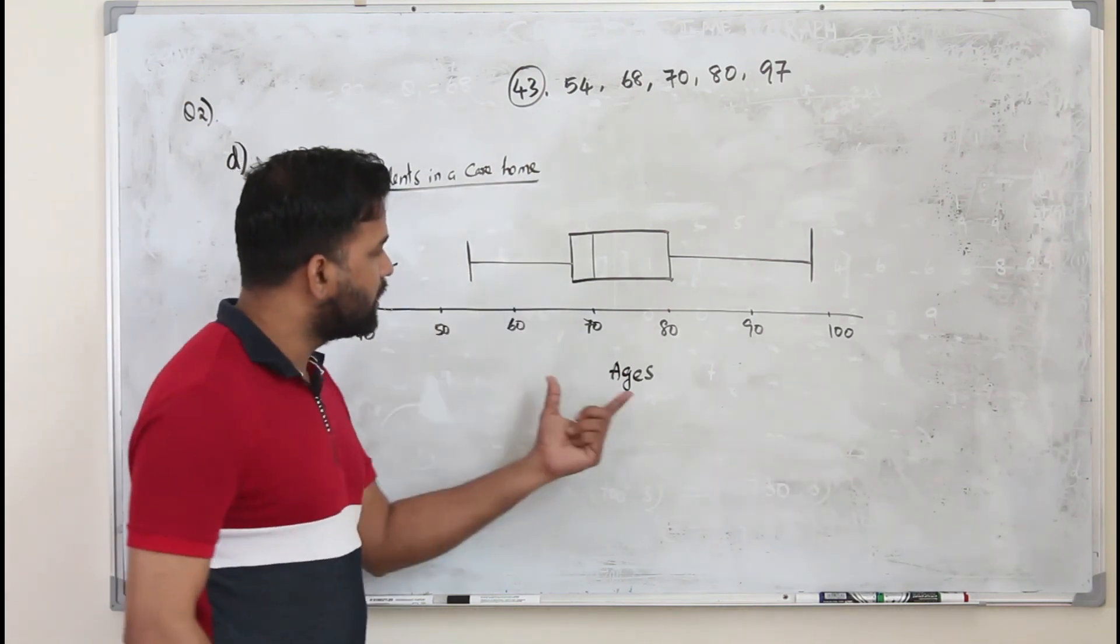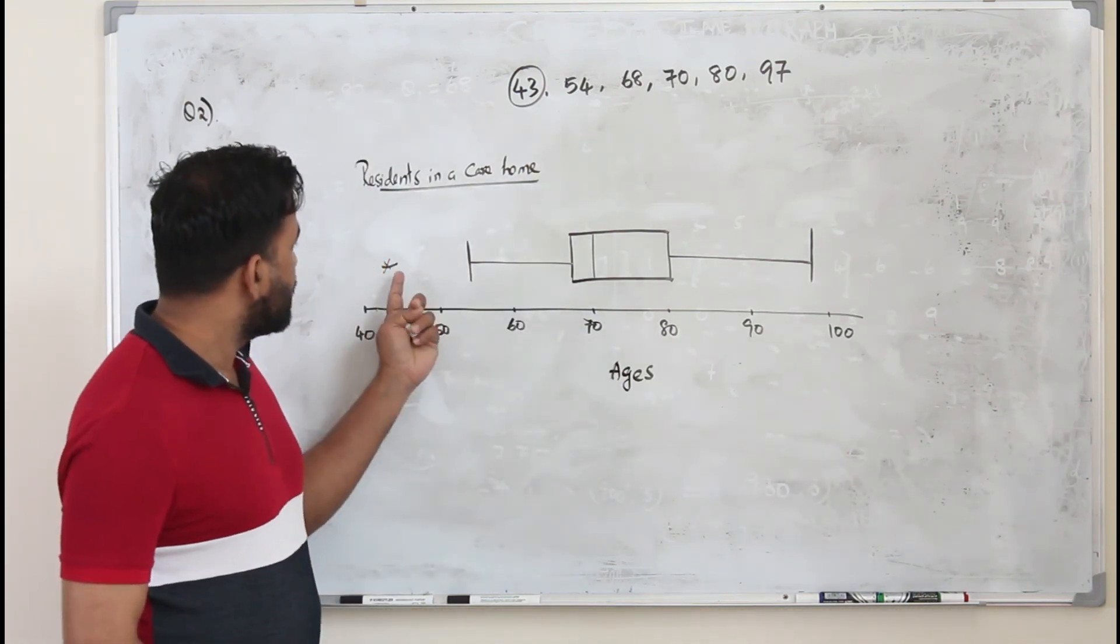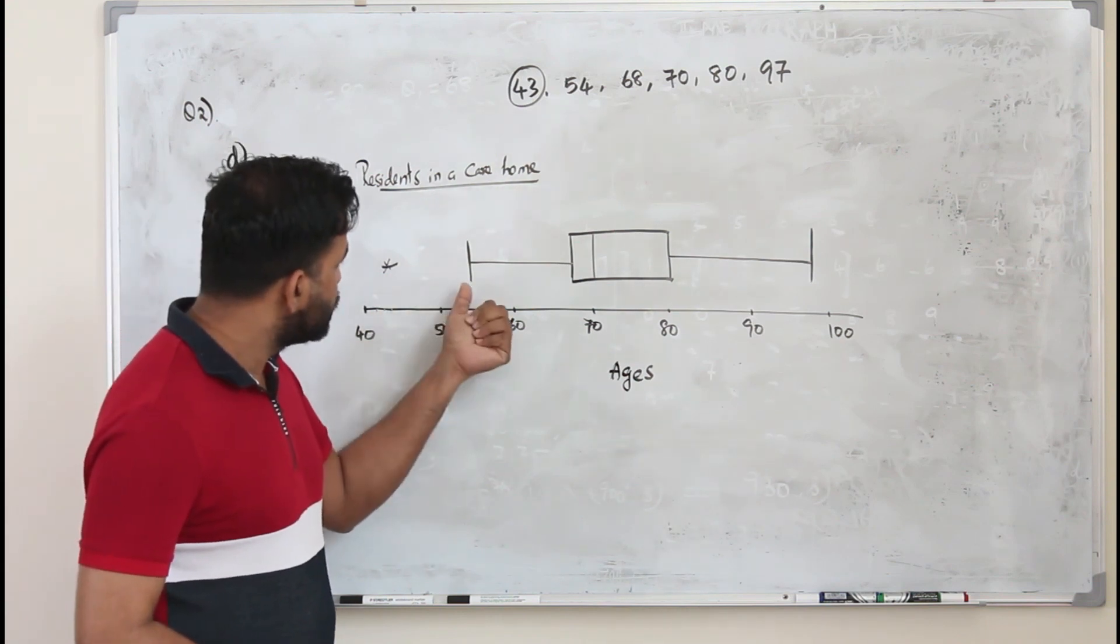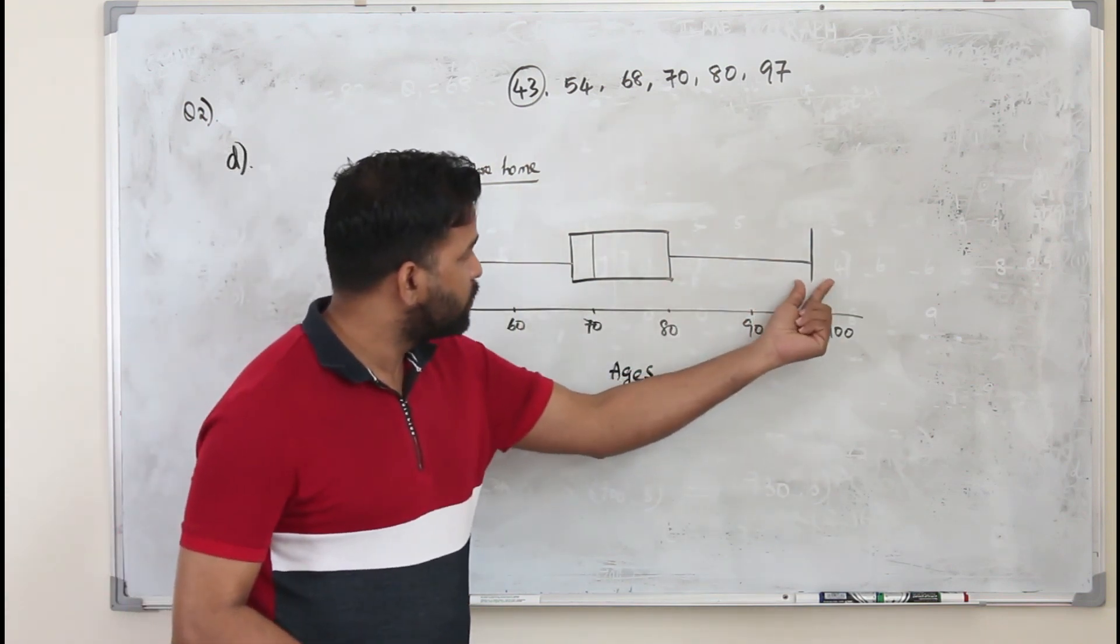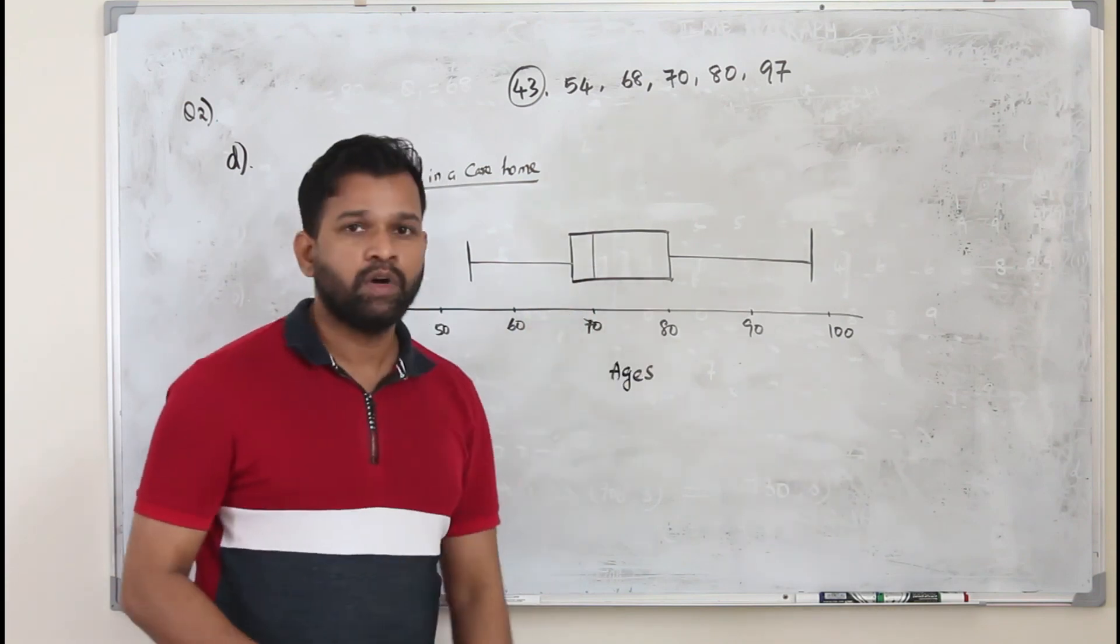So you have a title and you labeled it. You have an outlier here. Lowest value, the greatest value, median, lower quartile and upper quartile.